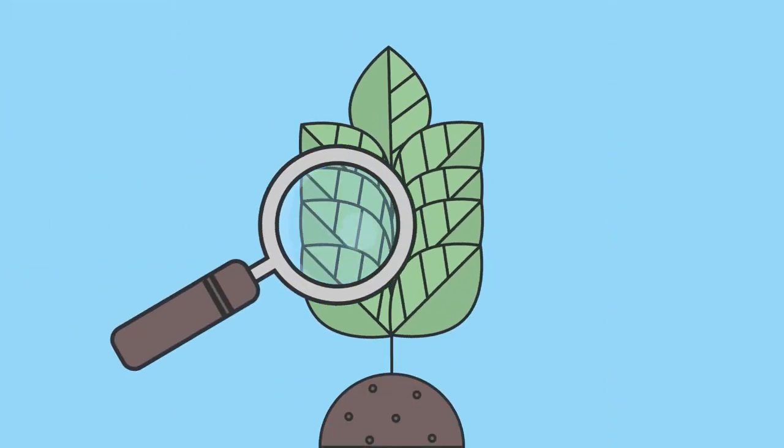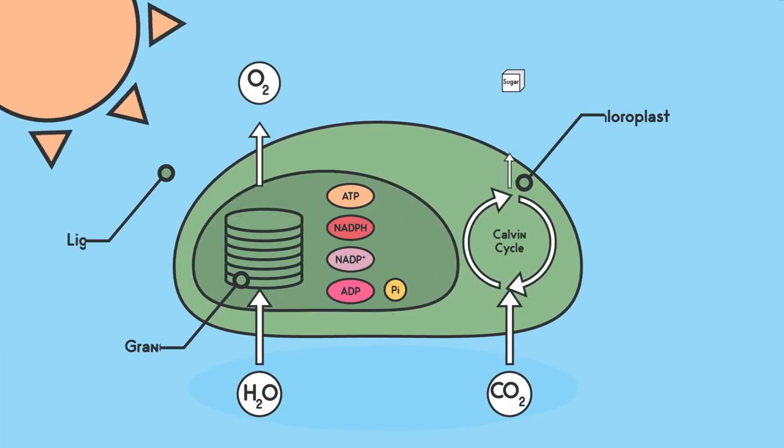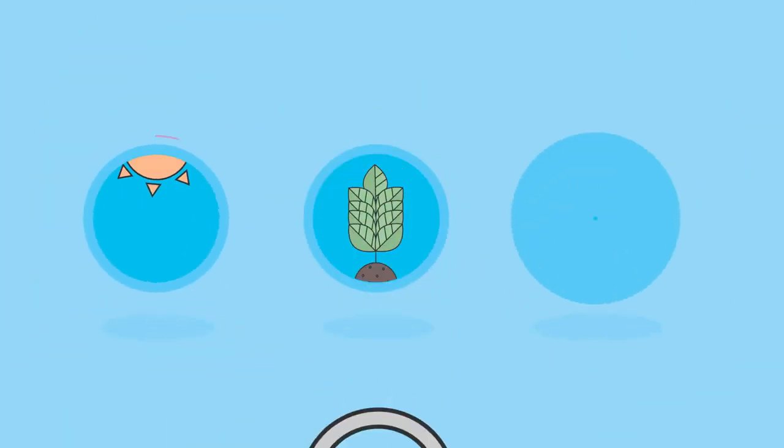The food chain begins with an organism that can utilise this energy directly to make its own food. The arrows in the food chain follow the flow of energy, so they always go from the food and point to the feeder.